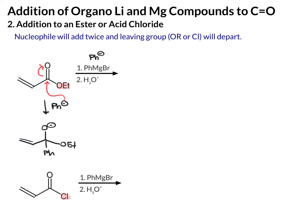Now we're at our tetrahedral intermediate, but we have the OEt group, and that is a good leaving group. So what's going to happen next is those electrons will come back down and you'll lose OEt minus. Now we have a ketone, and the nucleophilic phenyl minus will add to the ketone.